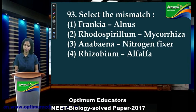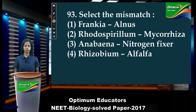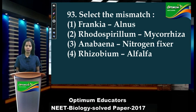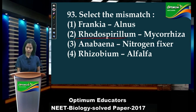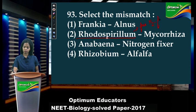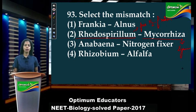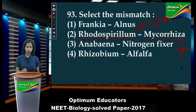Question number 93: 'Select the mismatch.' First option: Frankia and Alnus — Frankia is the name of a bacterium and Alnus is a plant it associates with. Second option: Rhodospirillum and mycorrhiza. Rhodospirillum is a bacterium that carries out free nitrogen fixation, while mycorrhiza carries out symbiosis. Free-living and symbiosis cannot have any relation. So option 2 is the correct answer.